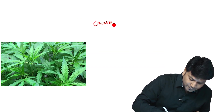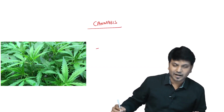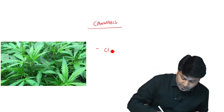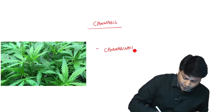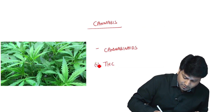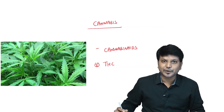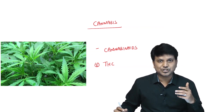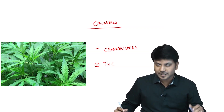This plant is cannabis, one of the most commonly abused substances. The active principles are cannabinoids, and the most important one is tetrahydrocannabinol (THC). Cannabis belongs to the group deliriant, and we may also get questions on the deliriant group.